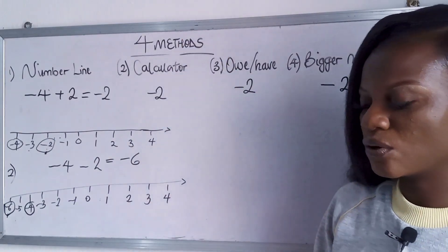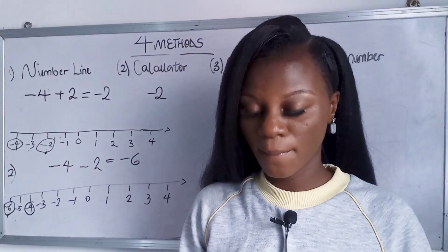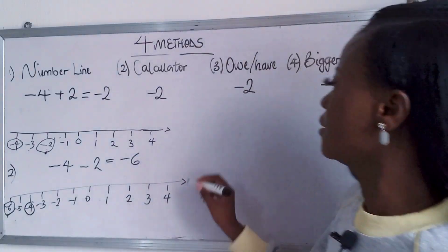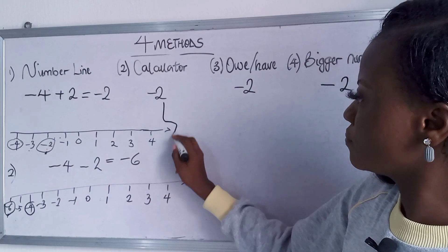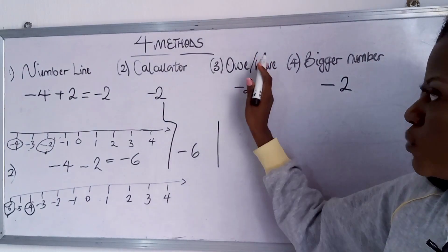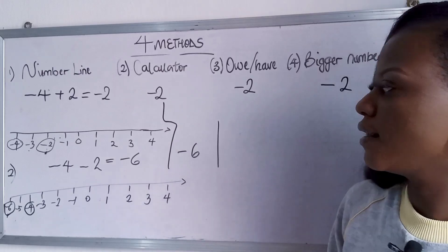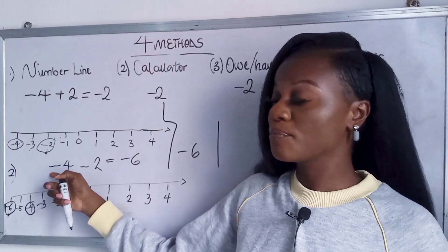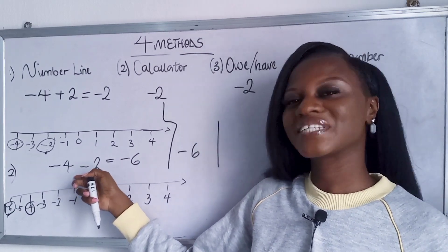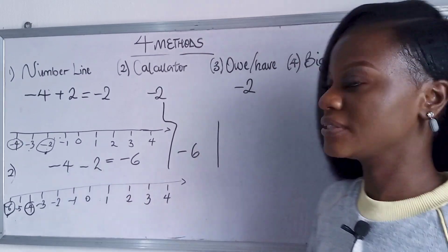Now use your calculator method for our second method. Put in minus four minus two. We're getting minus six. Now for this third method we said owe and have. So in this case we're having minus and minus meaning we're owing four and also owing two. So all together we're owing six.